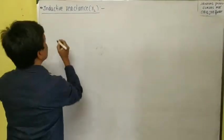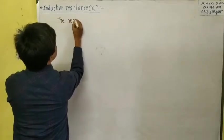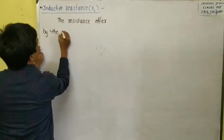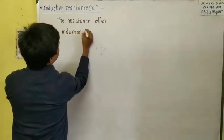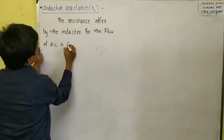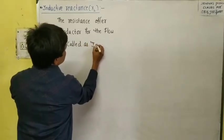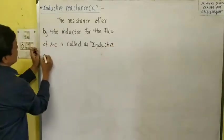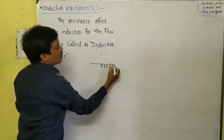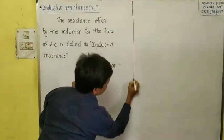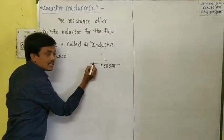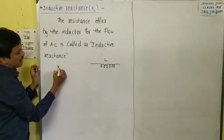Inductive reactance means the resistance offered by the inductor for the flow of AC. This is an inductor — an inductor means it is a coil with large self-inductance. The resistance offered by the inductor for the flow of AC is called inductive reactance. For AC current, the inductor will offer some resistance, and that resistance is called inductive reactance.